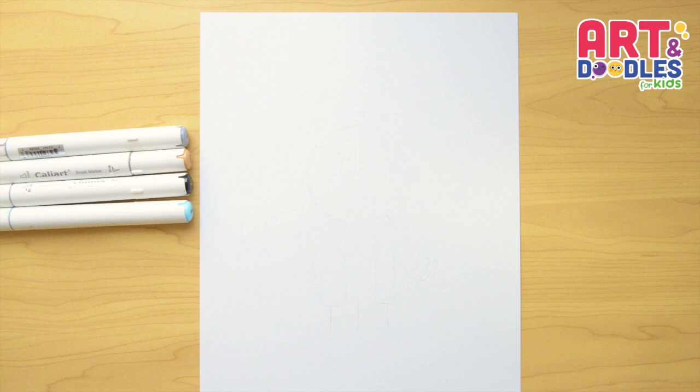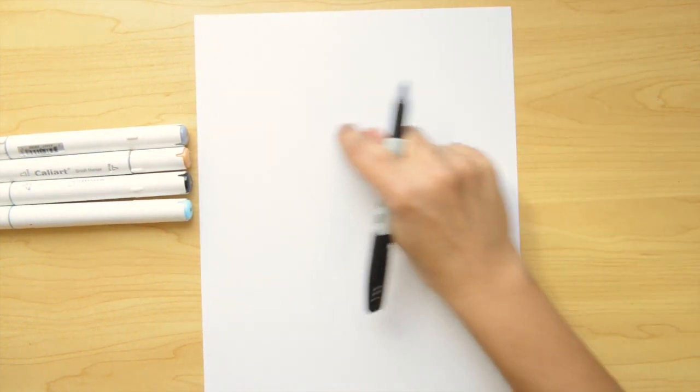Okay, we're gonna need paper, something to color with, I'm using markers and something to draw with. I will use a black marker that you can change for pencil. Okay, let's start in the middle of the paper.